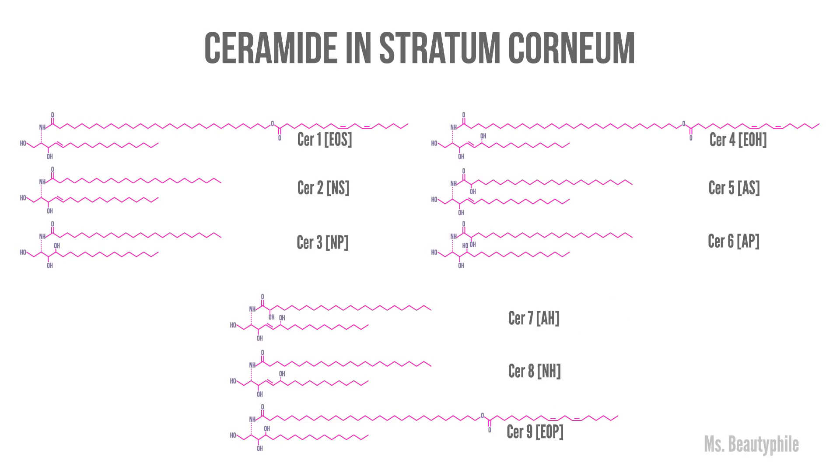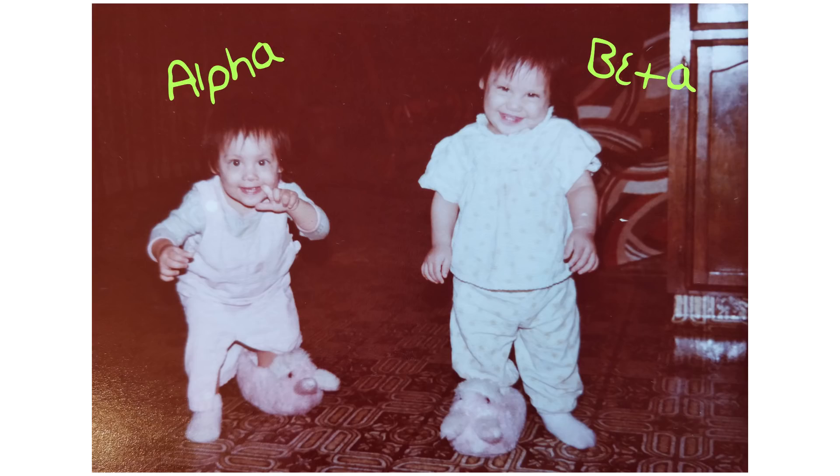Imagine if you had a family and you just named your kids one through nine. This reminds me of when I was a kid and my dad wanted to name my twin sisters alpha and beta — my mom was like, yeah, no. These ceramides differ by their head group, the length of their chain, by the hydroxylation — which is the amount of OH groups they have — and whether they're saturated or not, which is the number of double bonds.